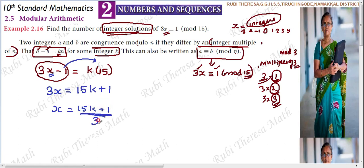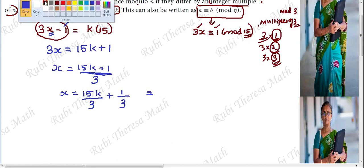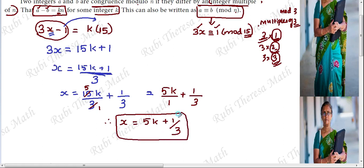Now, we have to separate the denominator for each numerator term. The denominator is 3, which is common. So splitting: 15 divided by 3 is 5, giving 5k, plus 1 by 3. Therefore x equals 5k plus 1 by 3.